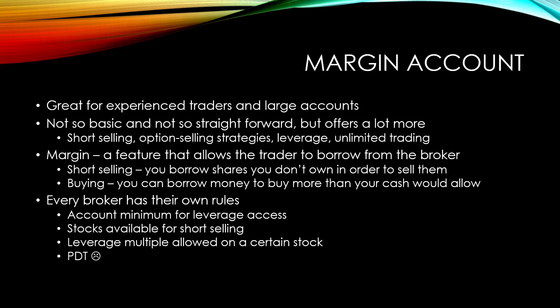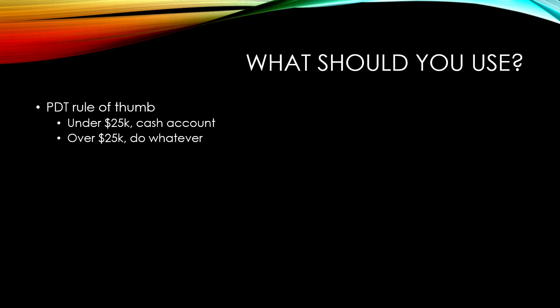So what should you use? To this point you probably already know which one fits you best. As a rule of thumb: if your account is below $25,000, you're likely better off with a cash account trading options. If your account is over $25,000, a margin account works and you get every feature — no restrictions. But you don't have to switch to a margin account. You can still use a cash account with $25k or more.